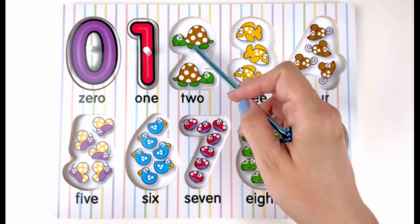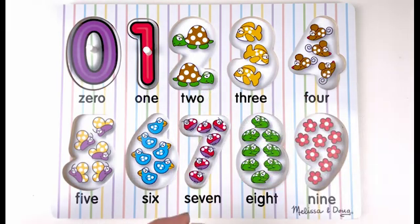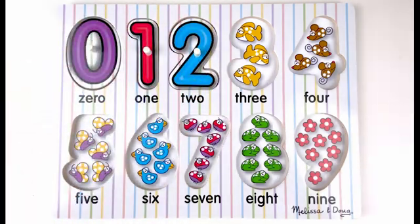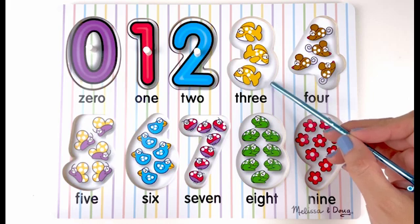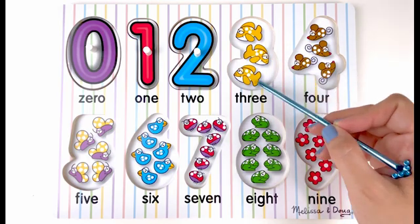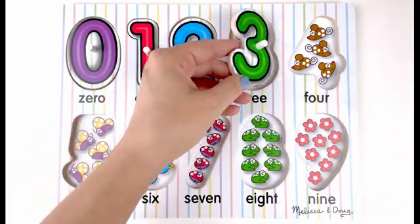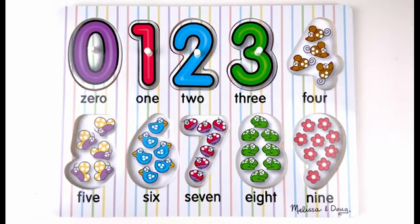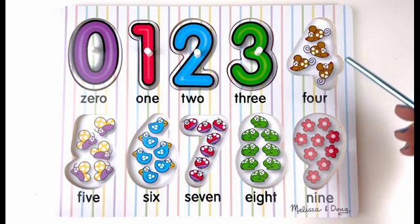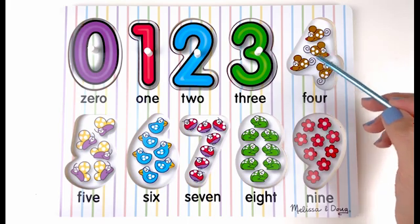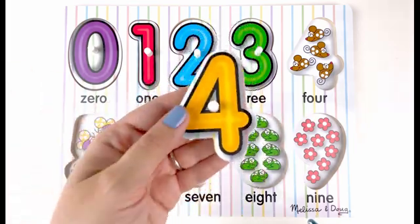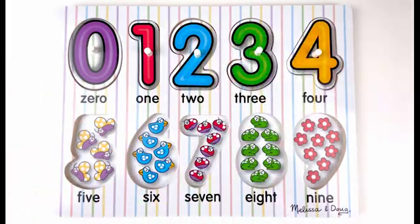Let's count: one, two. Two turtles. Number two. How many fish do you see here? Let's count: one, two, three. Three fish. Let's find out how many mice are here. Let's count together: one, two, three, four. Four mice.